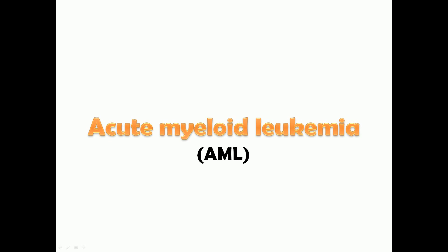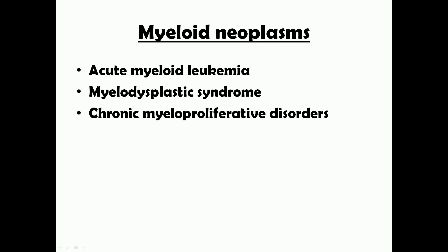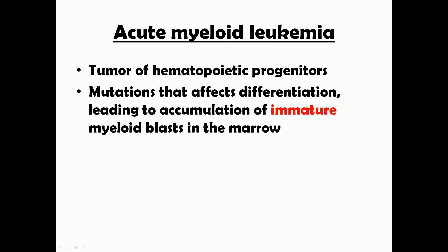In this video we're going to see about acute myeloid leukemia, also known as AML. In myeloid neoplasms there are three main divisions: acute myeloid leukemia, myelodysplastic syndrome, and chronic myeloid proliferative disorders. Acute myeloid leukemia is a tumor of hematopoietic progenitors formed due to mutations that affect differentiation, leading to accumulation of immature myeloid blasts in the bone marrow.